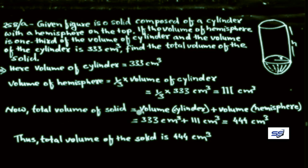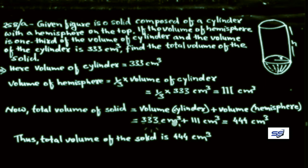Total volume of solid = volume of cylinder + volume of hemisphere = 333 + 111 = 444 cm³. The required total volume of the solid is 444 cm³.